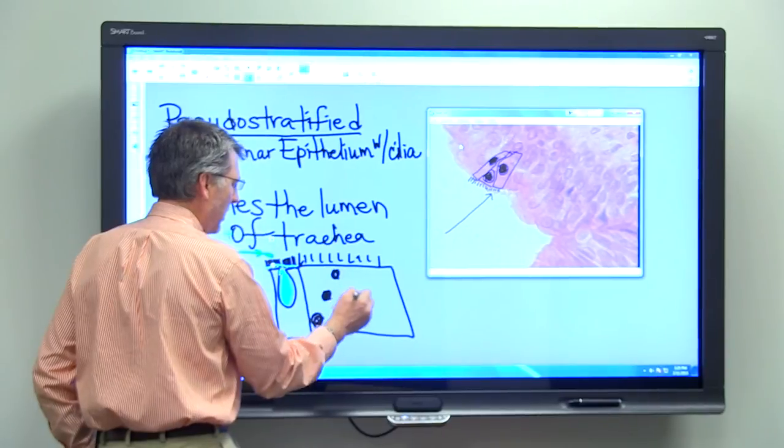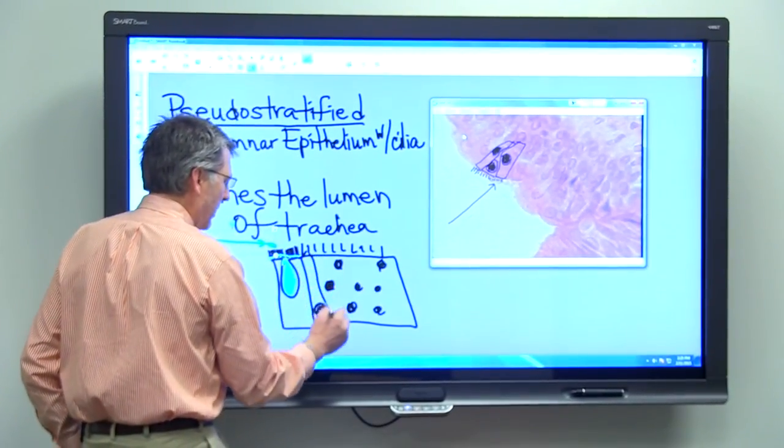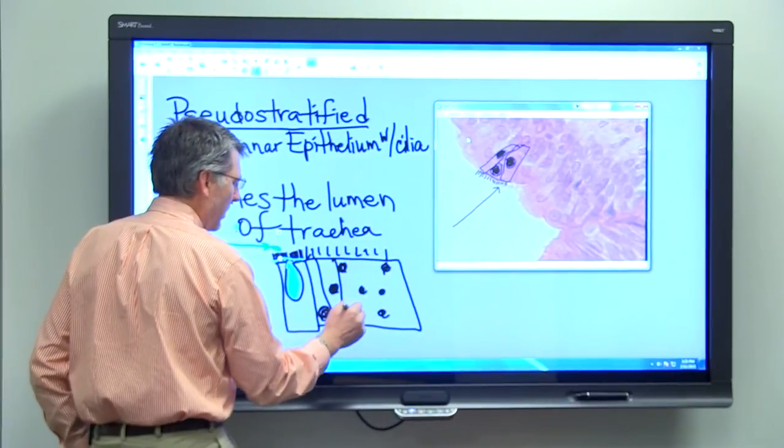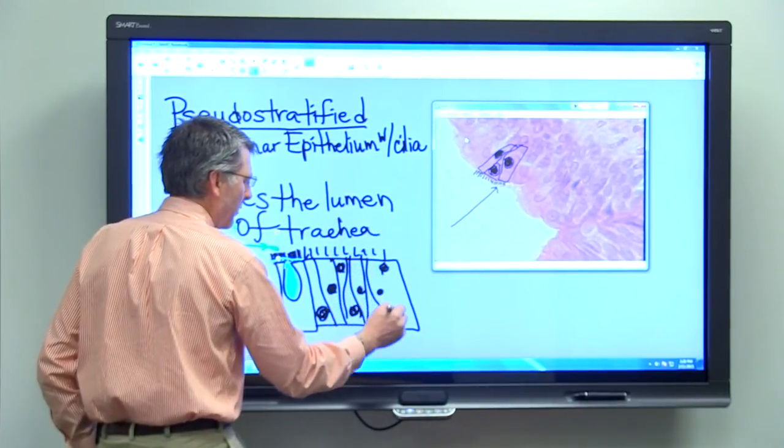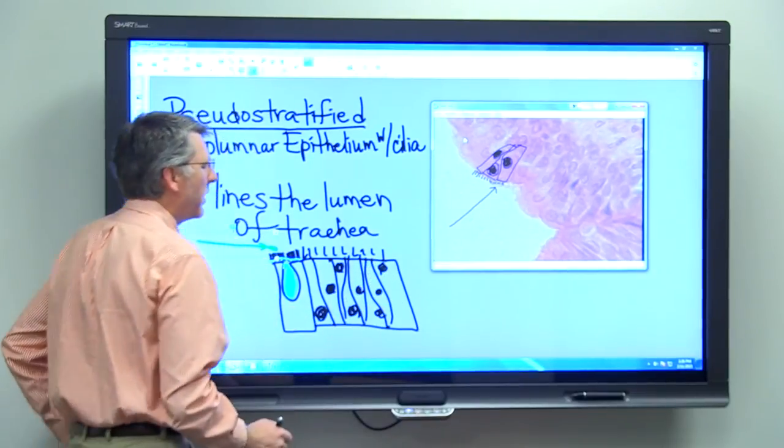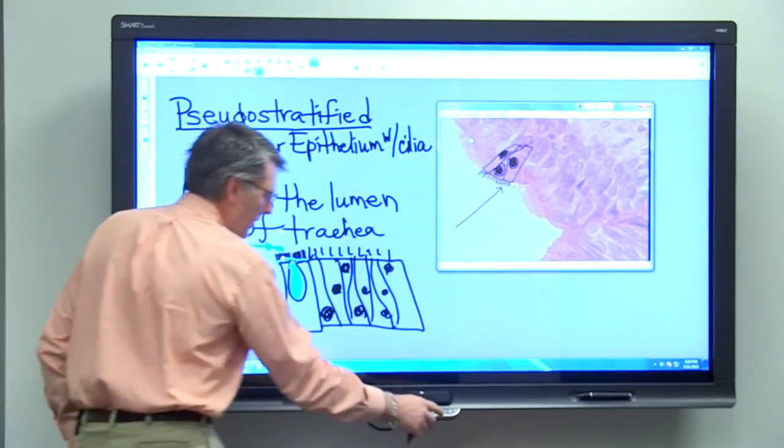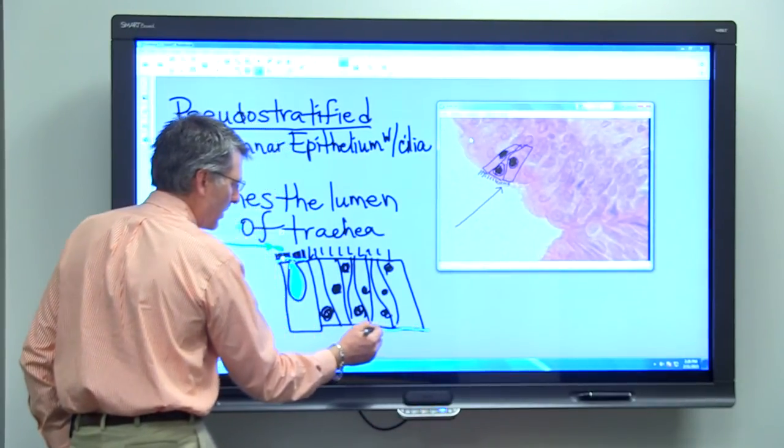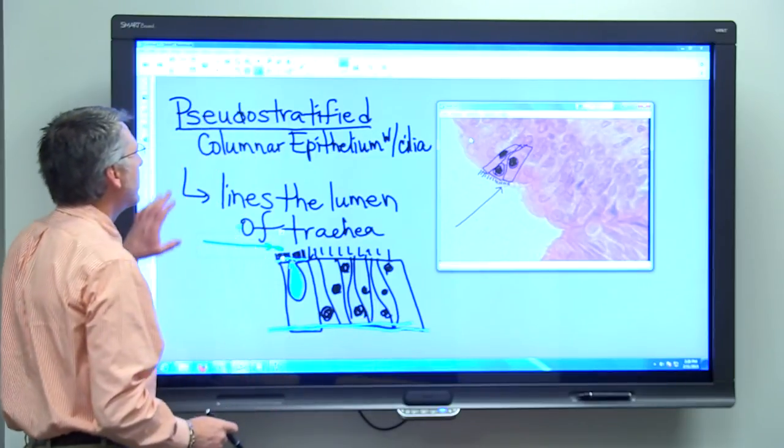A nucleus here, one here, here, here, that kind of thing. So that gives the tissue, when we look at it microscopically, the appearance of being layered. But it's not actually layered. It's actually a simple tissue that's attached to the basement membrane on this side.